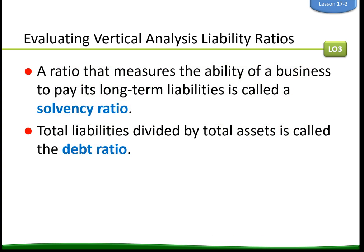A ratio that measures the ability of a business to pay its long-term liabilities is called a solvency ratio. The vertical analysis ratio for total liabilities is one type of solvency ratio. Total liabilities divided by total assets is called a debt ratio. Although solvency ratios are generally considered long-term measures, the debt ratio can also be used to rate the ability of a business to pay its current and long-term liabilities.